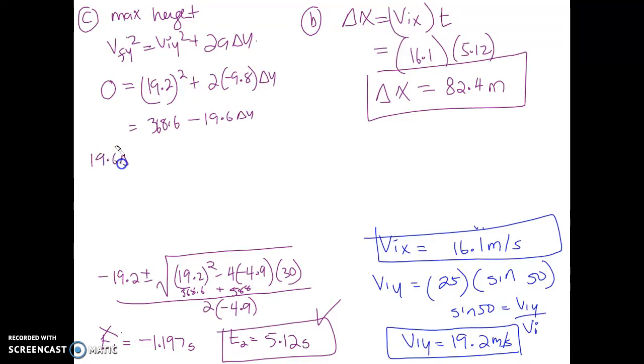Bring it over: 19.6 delta y equals 368.6. Delta y equals 19.2 divided by 19.6. What is your delta y? 18.8 meters. This is how high my object, my ball, will go.